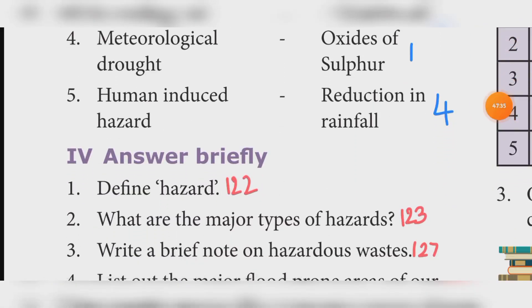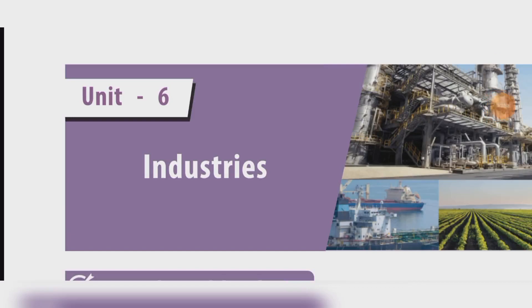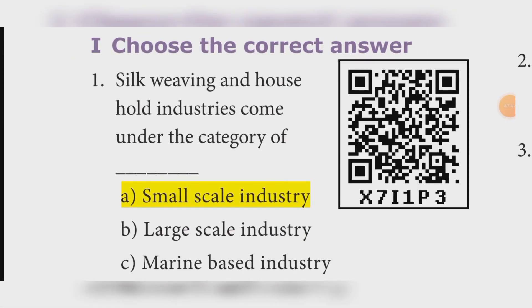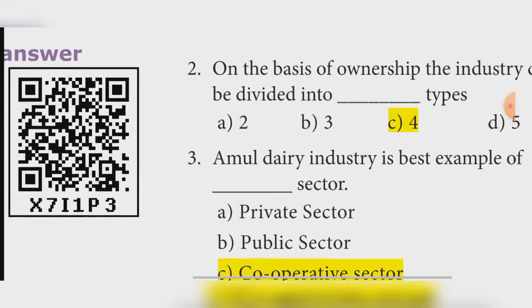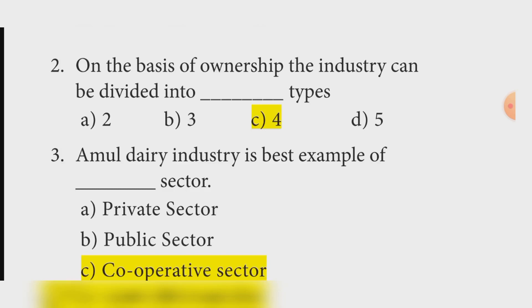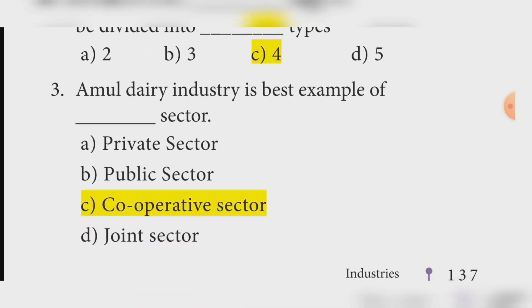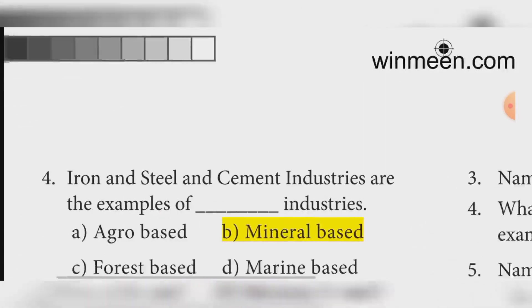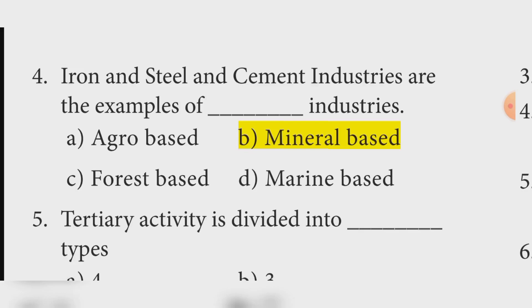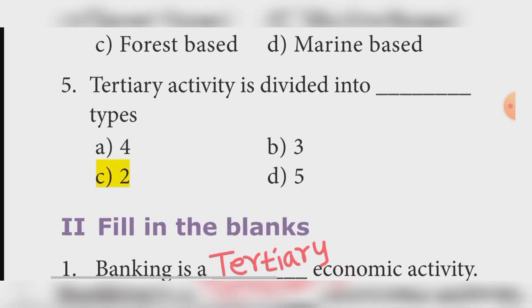Unit 6, Industries. Choose the correct answer. First: Silk weaving and household industries come under Small scale industry. Second: On the basis of ownership, industry can be divided into four types. Third: Amul Dairy Industry is the best example of Cooperative sector. Fourth: Iron, steel, and cement industries are examples of Mineral-based industries. Fifth: Tertiary activity is divided into two types.